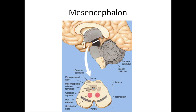Then we get to the mesencephalon. This has a number of nuclei in it — the red nucleus, which is physically red if you look at a slice because it's full of tiny blood vessels, and the substantia nigra. We have these little control centers in these nuclei for some fundamental functions.